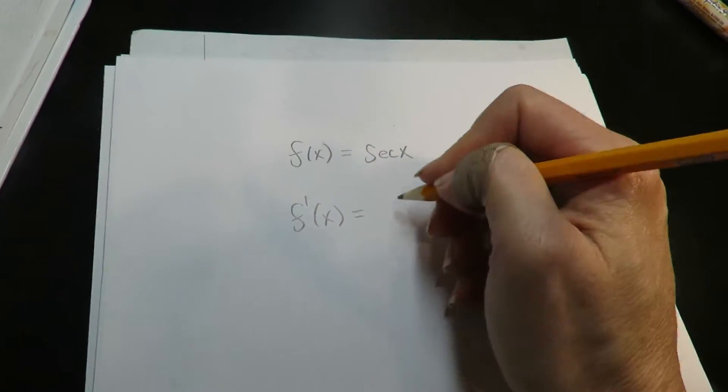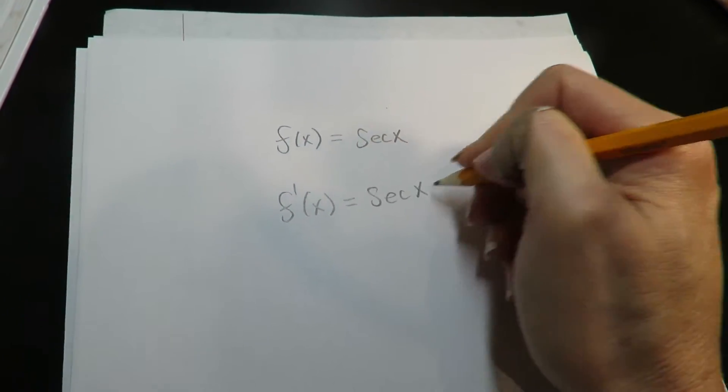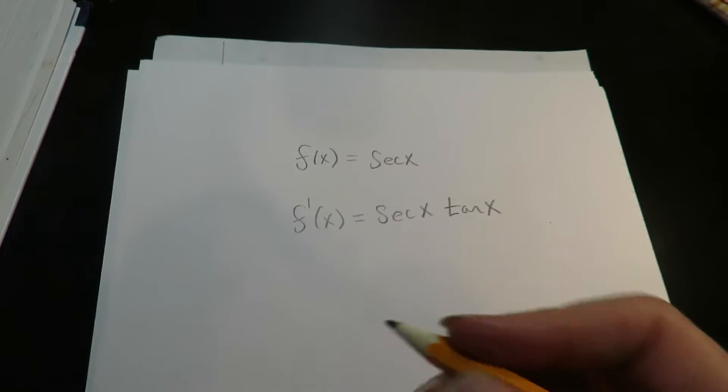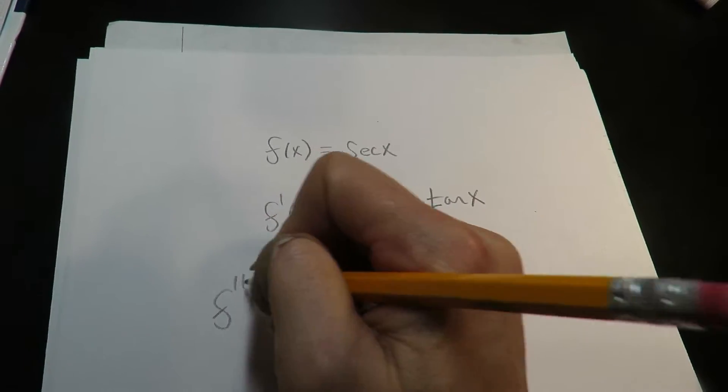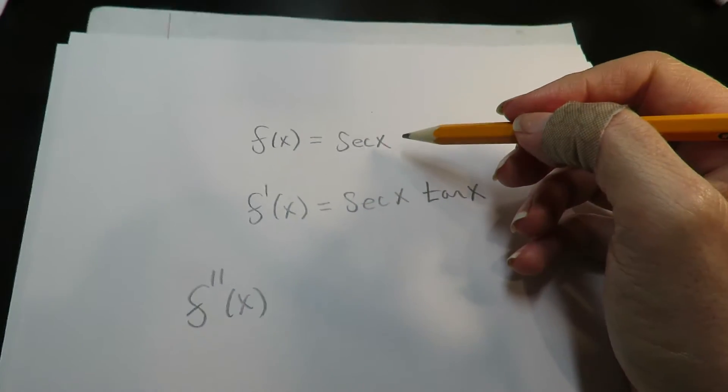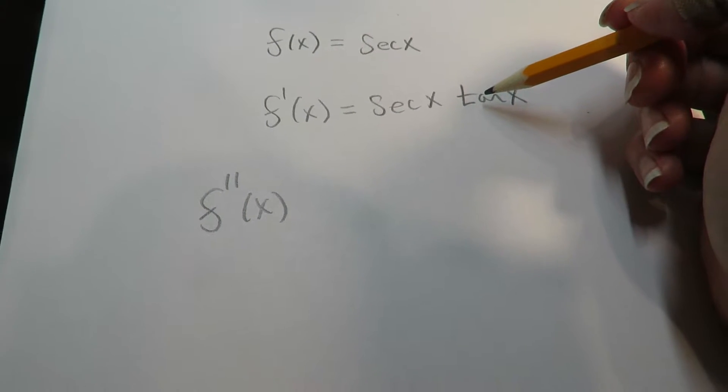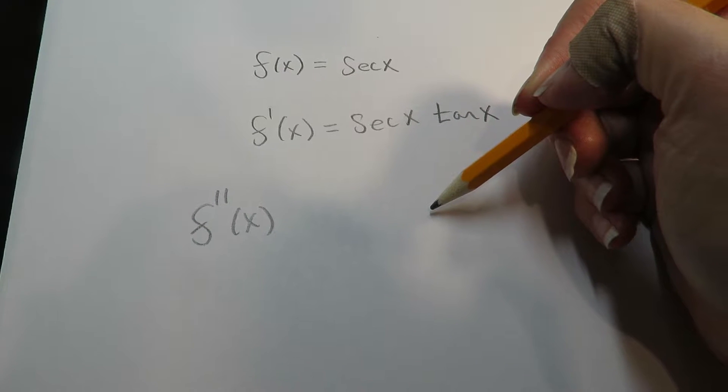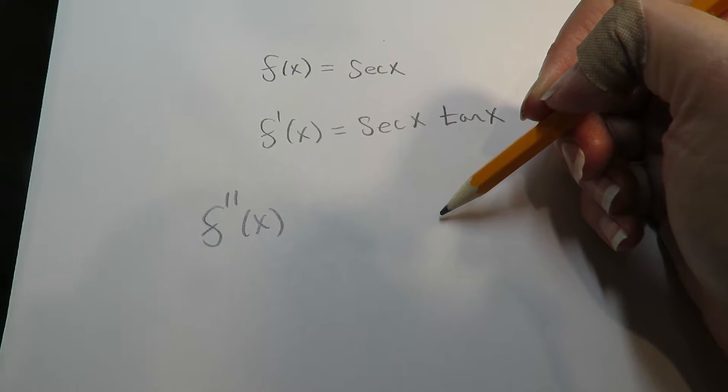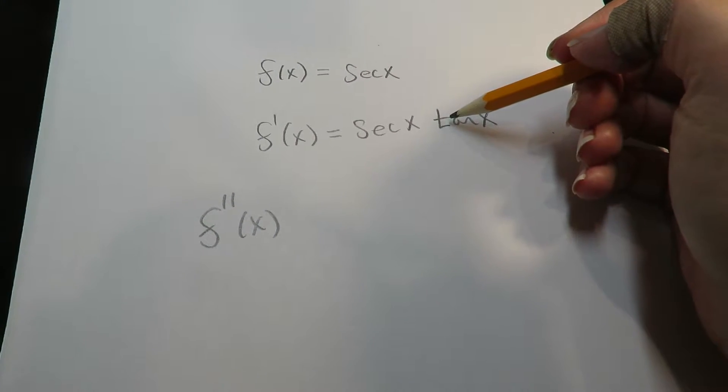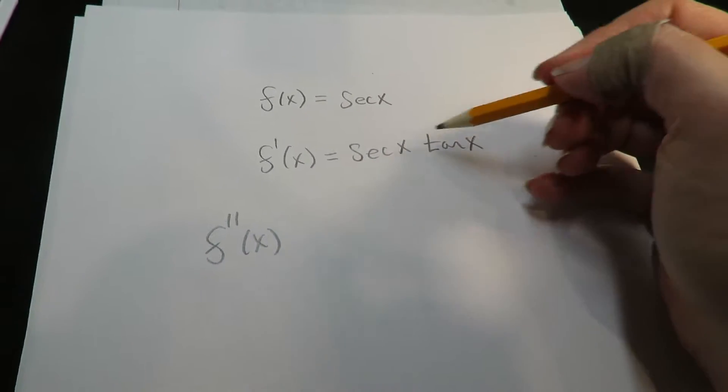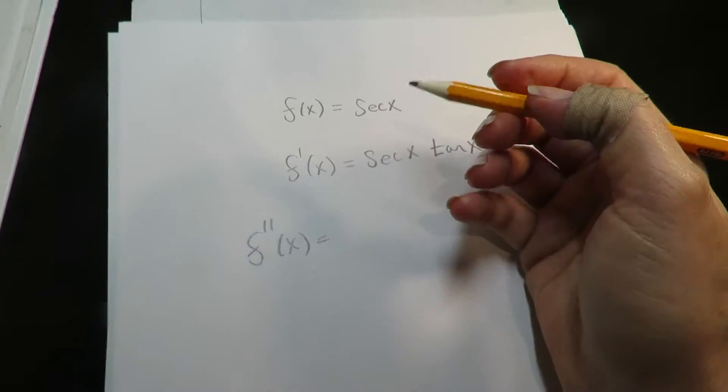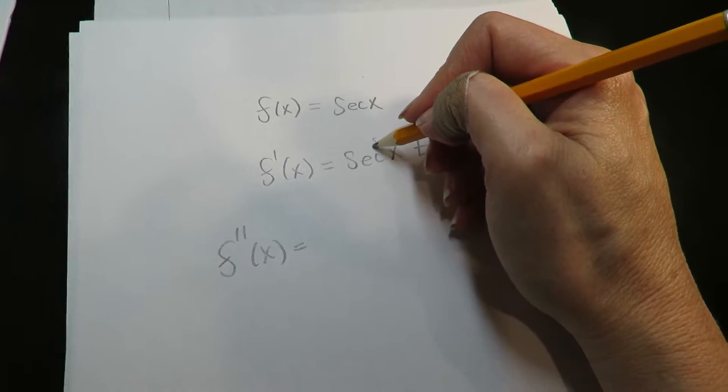We're going to start with the first derivative. The first derivative of this function would be secant x tangent x. Now the second derivative: if you notice when we took the first derivative it became a product. So now for me to take the second derivative, what rule do I have to use? I have to use a product rule because now what I'm trying to take the derivative of is a product.